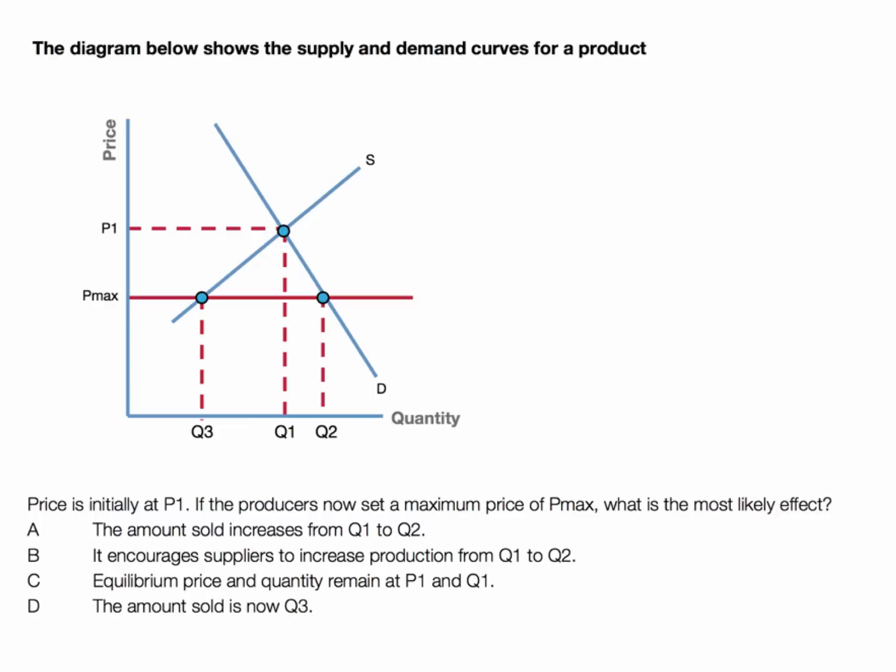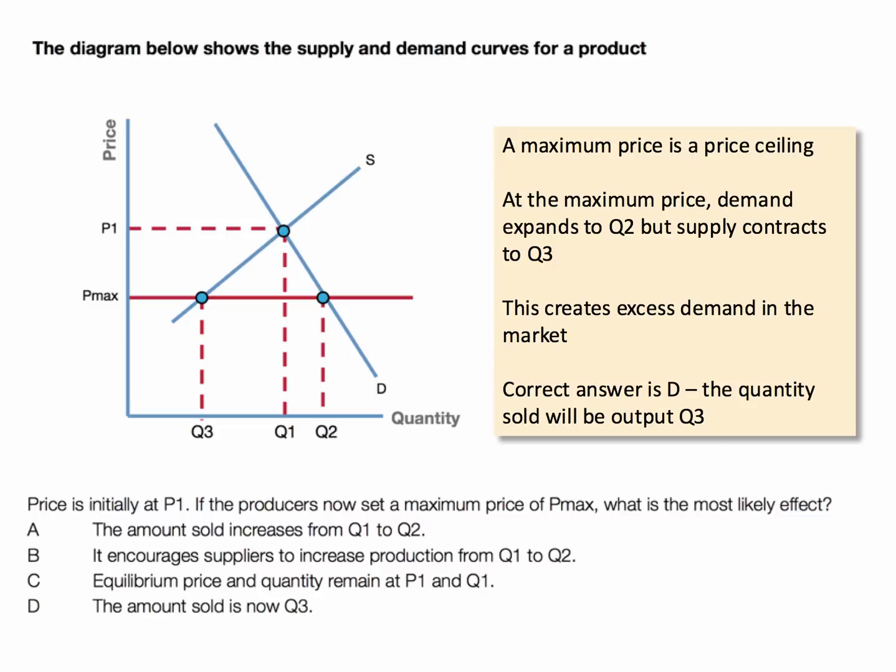Of course, the maximum price is a price ceiling. The price cannot rise above that level, and it's only effective if it's set below the equilibrium, which in this case it has been. So at that maximum price, consumers would like to buy more — demand expands to Q2 — but producers won't supply as much. Supply will contract to Q3, creating an excess demand in the market.